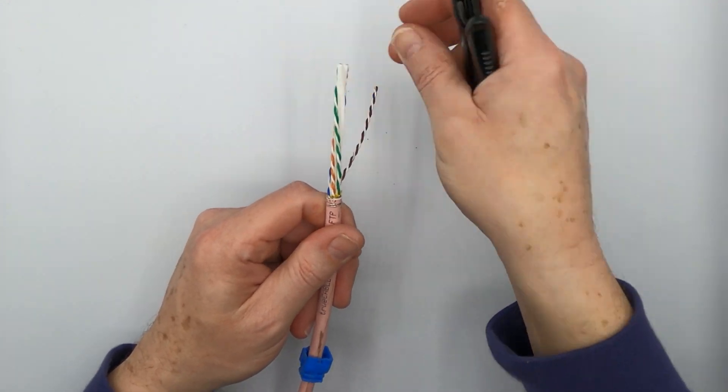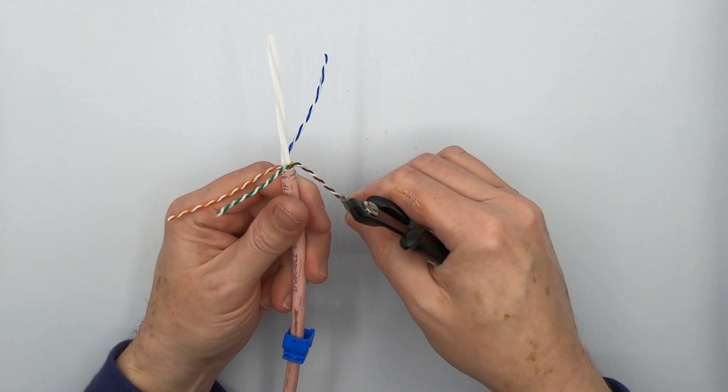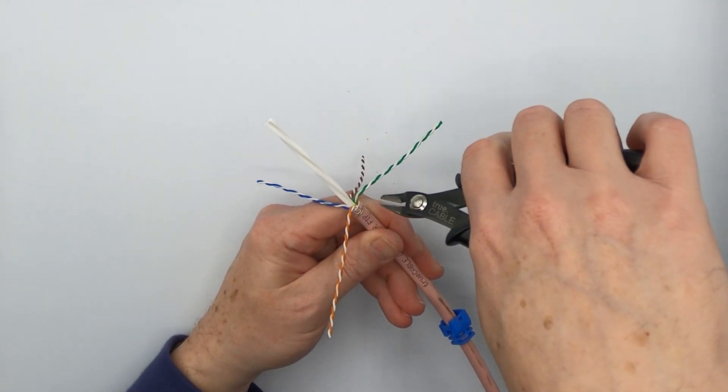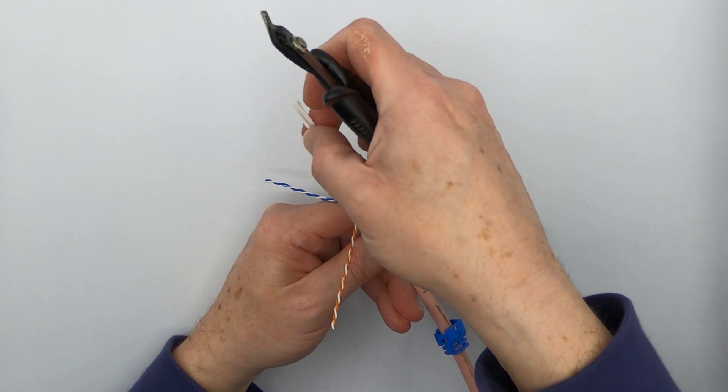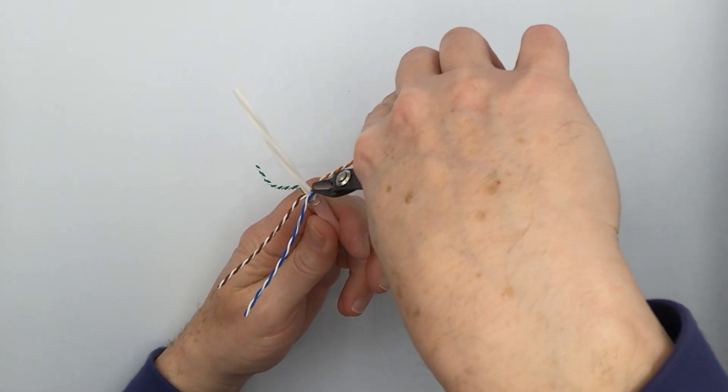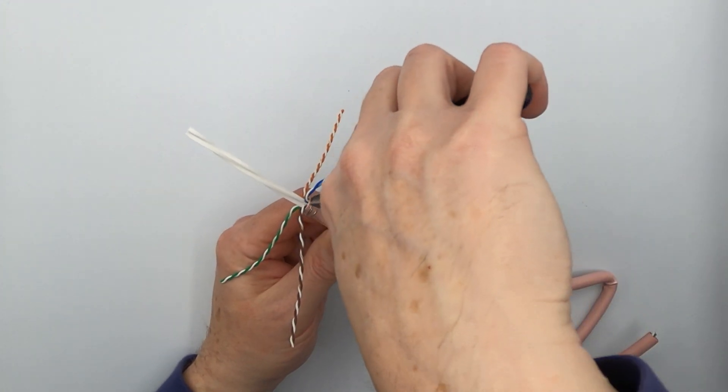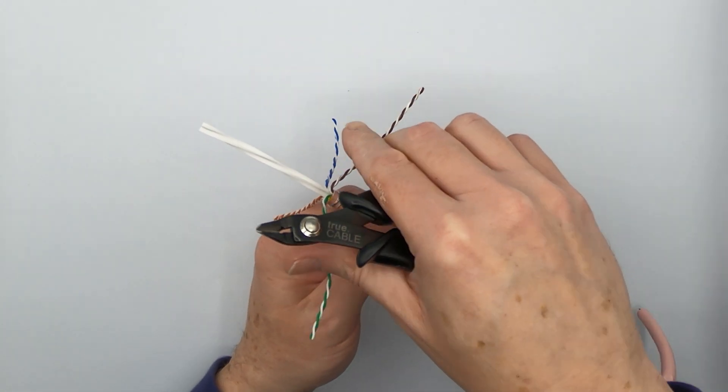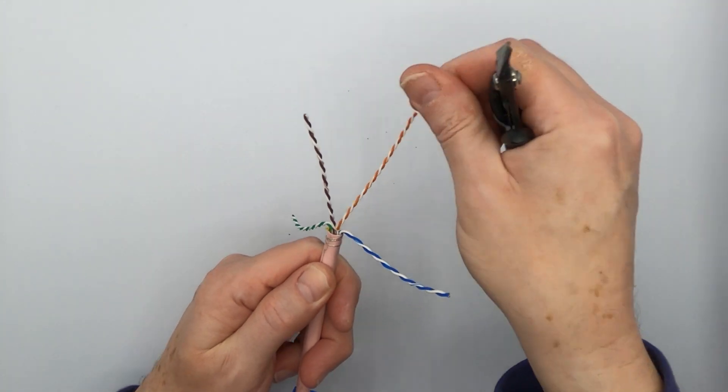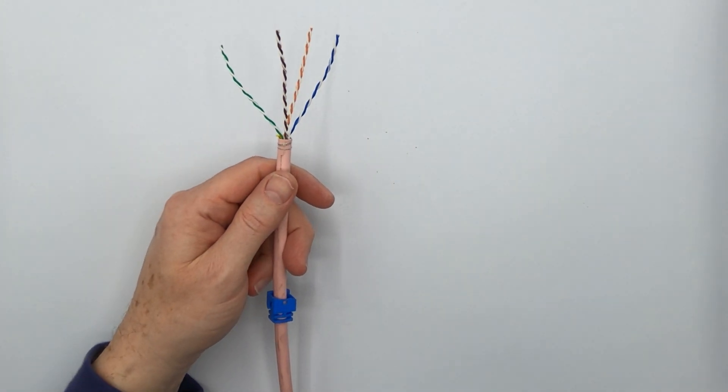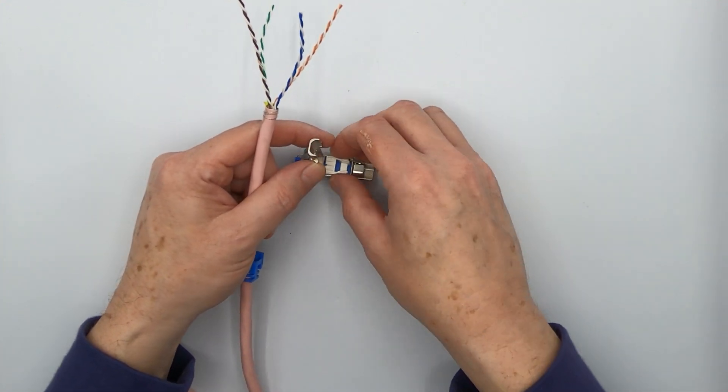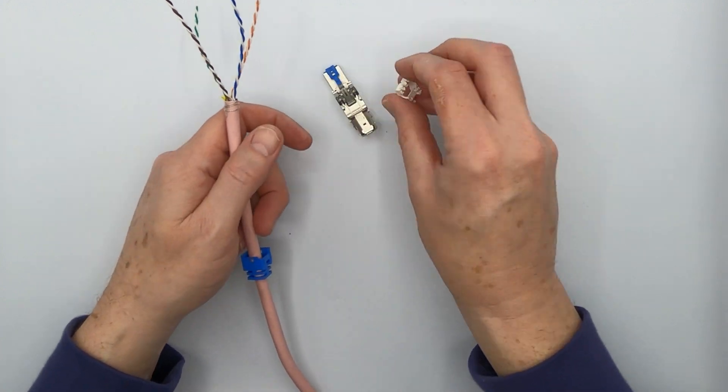The next step after that is to put your conductors into a star pattern and take off the spline. One thing I do caution against is cutting the spline straight across. What I will typically do is rest the clippers against the cable jacket edge and snip each of the four wings at a downward angle. The reason is that you want to get it as close as you can to the cable jacket. Twist and it's gone. Fold your pairs back out.